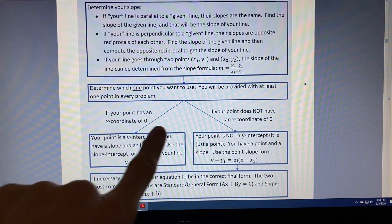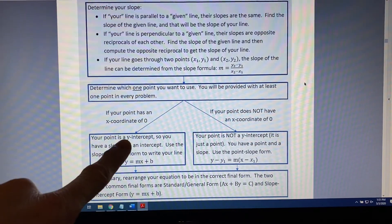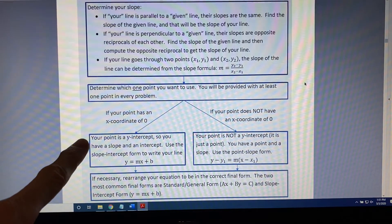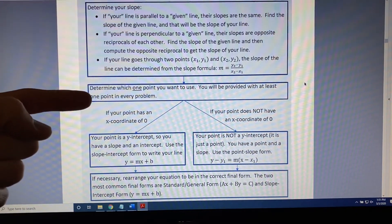If you have an x-coordinate of zero, and you take the path to the left, well then your point is a y-intercept, because all y-intercepts have an x-coordinate of zero. So, think about what you have at that point. You have a slope, and your point is an intercept.